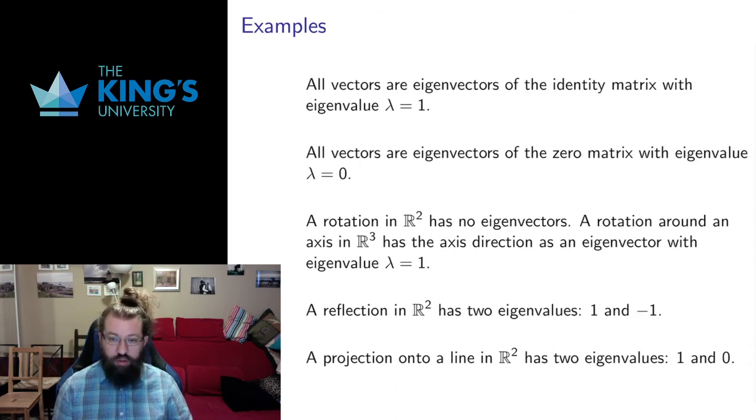A rotation in R2 doesn't fix any directions. Rotation rotates all directions. There are no directions that are unchanged. An eigenvector is a direction which is unchanged, so a rotation in R2 cannot have any eigenvectors.